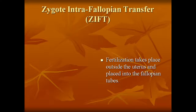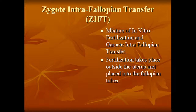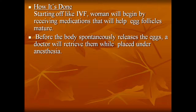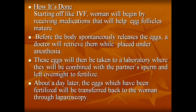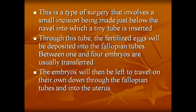Zygote intrafallopian transfer (ZIFT): a mixture of IVF and GIFT. Fertilization takes place outside the uterus and the fertilized egg is placed into the fallopian tubes. Starting like IVF, women receive medication to help follicles mature; before spontaneous release, the doctor retrieves the eggs under anesthesia. The eggs are taken to the laboratory, combined with the partner's sperm, and left overnight to fertilize. About a day later, the fertilized eggs are transferred back via laparoscopy — a small incision just below the umbilicus — through which the fertilized eggs are deposited into the fallopian tube. Between one and four embryos are usually transferred and left to travel down to the uterus.